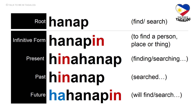Root word: hanap — meaning find or search. Infinitive form: hanapin — to find a person, place, or thing. Present tense: hinahanap — finding or searching. Past tense: hinanap — searched. Future tense: hahanapin — will find or will search.